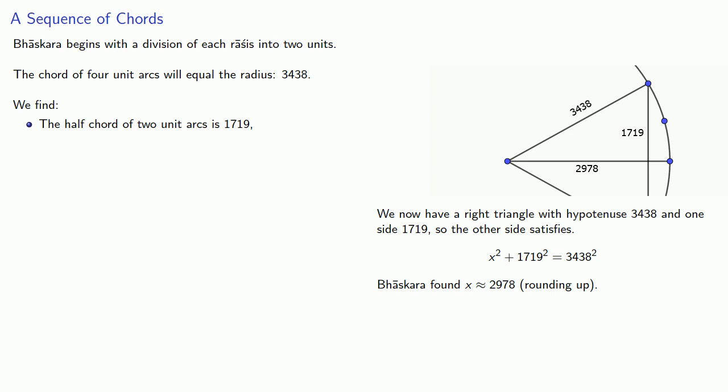And remember, this is actually the half-chord of the complementary arc. So the quarter circle is three racis divided into two arcs. It's six-unit arcs. And so this amount is the half-chord of six minus two, four-unit arcs.